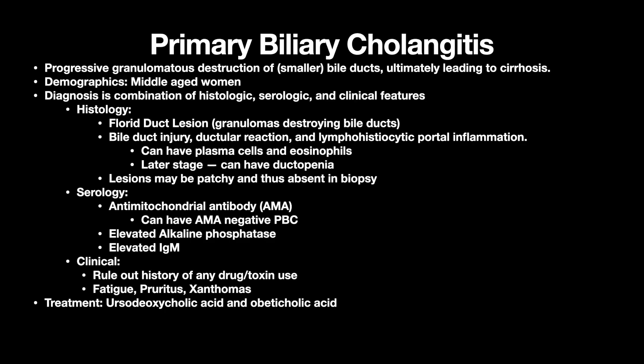Now, primary biliary cholangitis. This is a progressive granulomatous destruction of smaller bile ducts — in contrast to primary sclerosing cholangitis — ultimately leading to cirrhosis. Demographics: middle-aged women. You look for a combination of factors: the florid duct lesion, which is granulomas destroying bile ducts, bile duct injury, ductular reaction, and lymphohistiocytic portal inflammation. You can have plasma cells and eosinophils, but not a lot. At a later stage, you can have ductopenia because the ducts are being destroyed.